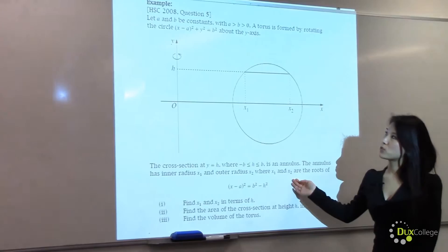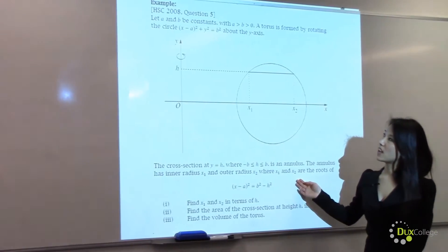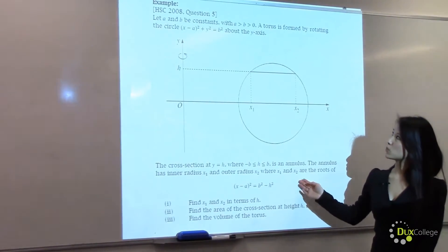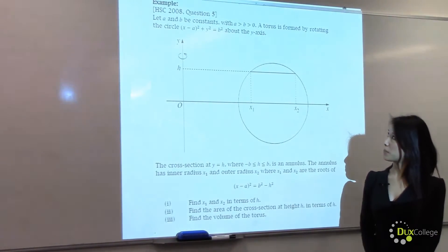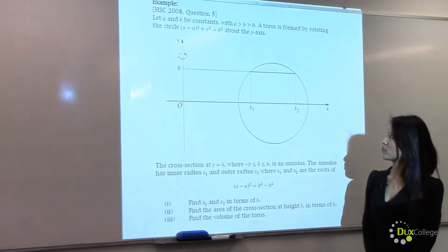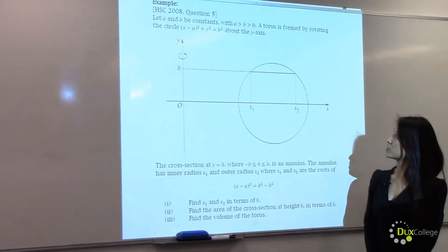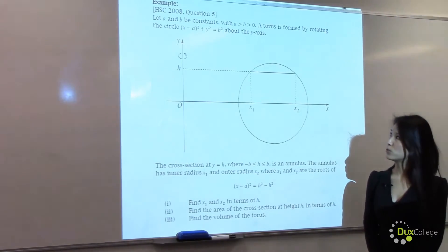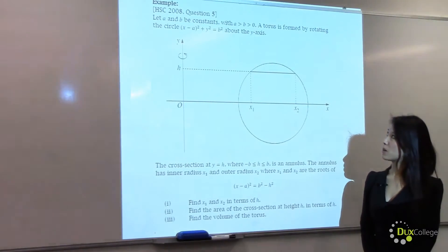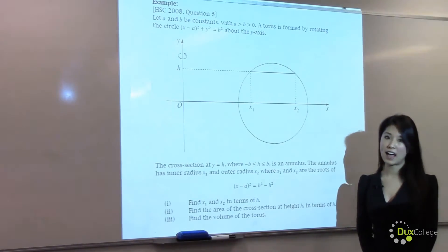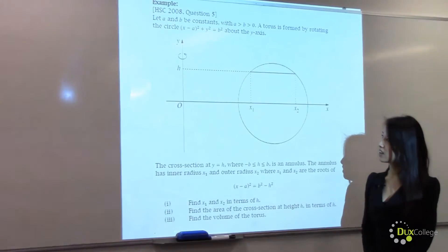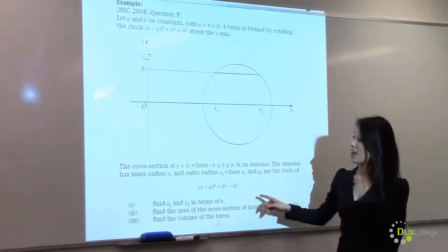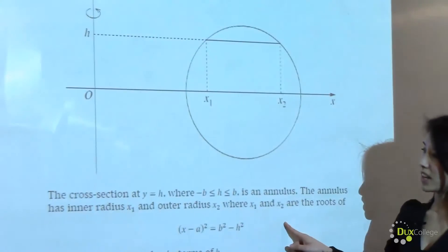This question says: let a and b be constants with a greater than b greater than 0. A torus is formed by rotating the circle given about the y-axis. Here's a diagram.